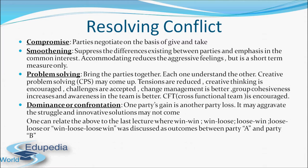The second popular technique is called smoothening, which is very much applied in many organizations. It means suppressing the differences existing between parties and emphasizing the common interest — the larger interest of the organization or team. It is accommodating and reduces aggressive feelings, but it is a short-term measure only. You are forgetting about the conflict itself and looking at the larger common interest. Over the longer term, those conflicts will come up again, so this can be considered only a short-term measure.